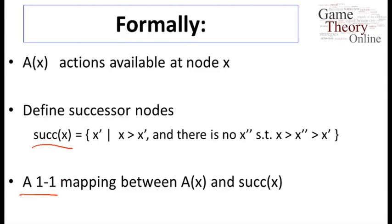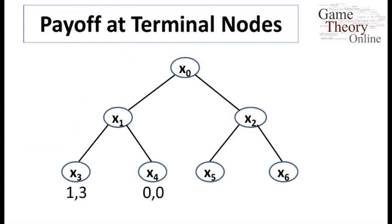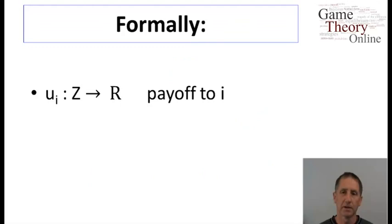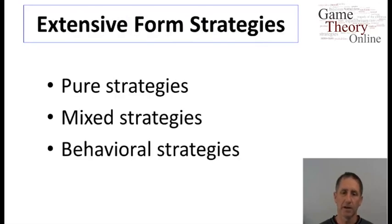Now that we know what agents can do, we just need to say what agents care about, and then we'll finish defining the game tree. We simply associate some payoffs — one payoff for each agent — with a payoff function from the terminal nodes to the real numbers. So that was a lot of notation to specify the obvious.